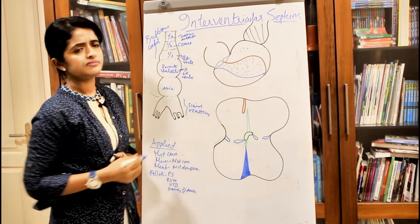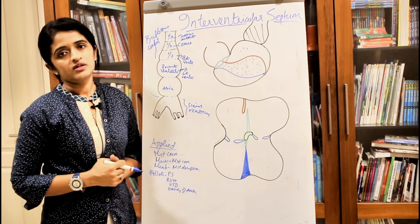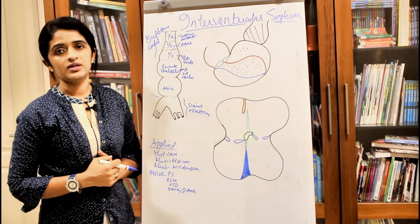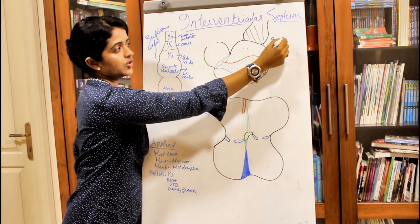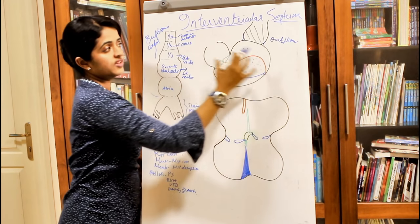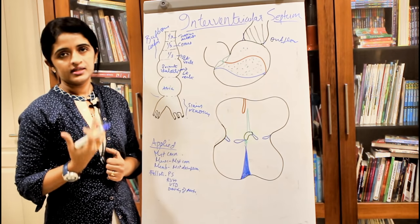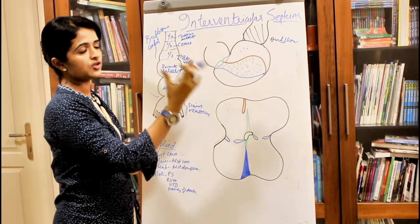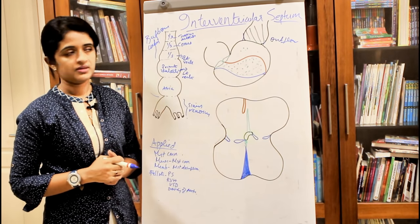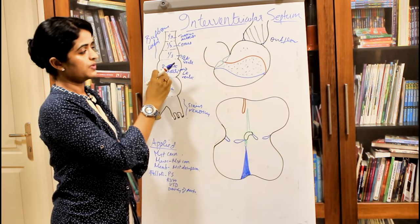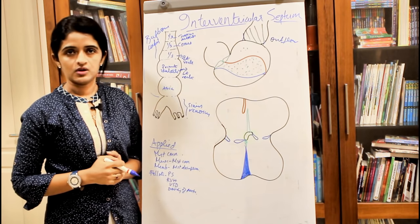The middle one-third of the bulbus cordis — the conus — forms the outflow tract of the ventricles. The outflow tracts of the right and left ventricles are the pulmonary trunk and the aorta respectively. So the outflow tract is actually formed by the conus of the bulbus cordis.